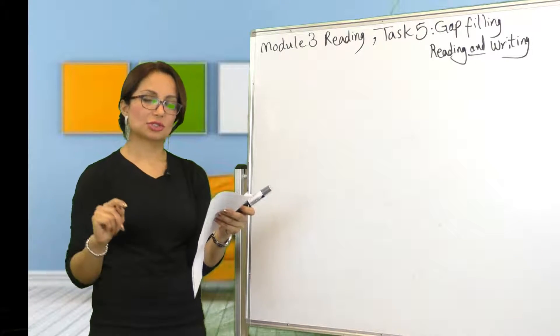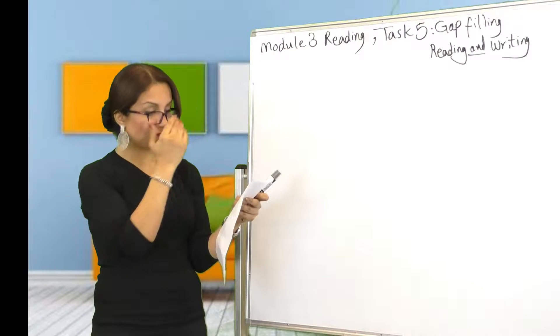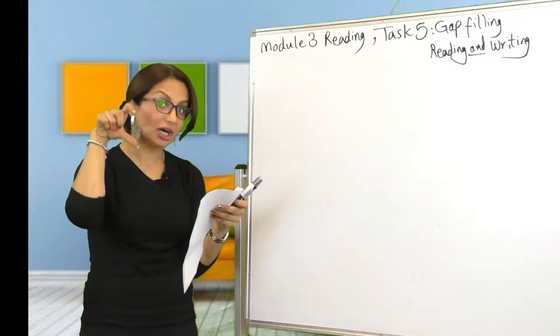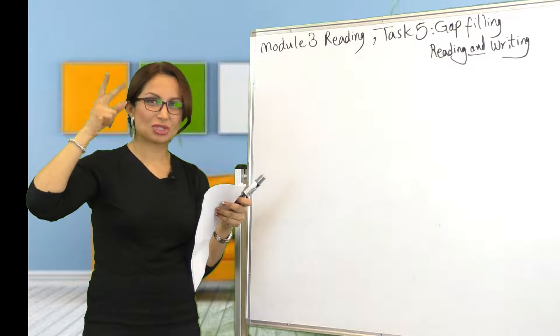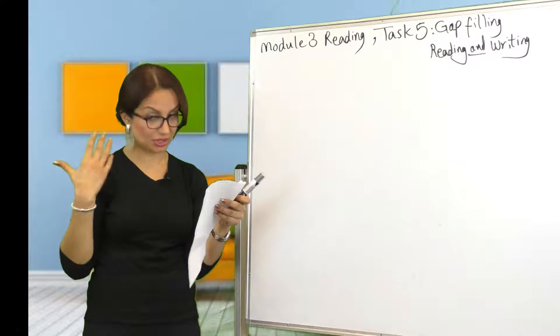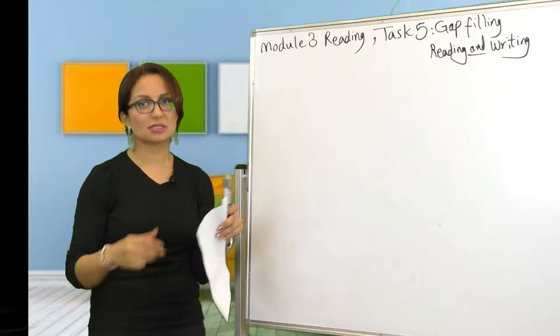While for the previous one, the structure was a bit different, here in reading and writing gap filling, the paragraphs are longer. You will be given a text or a short passage with sometimes two to three paragraphs, so the passage is longer, and for each blank you will be given four options.